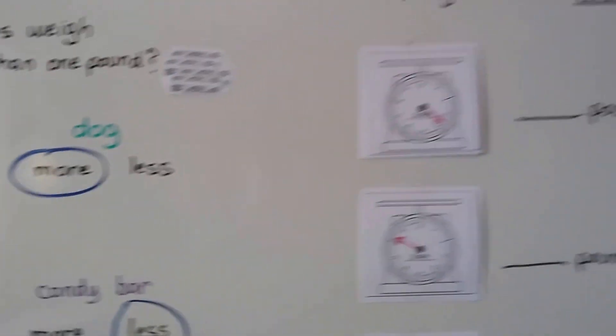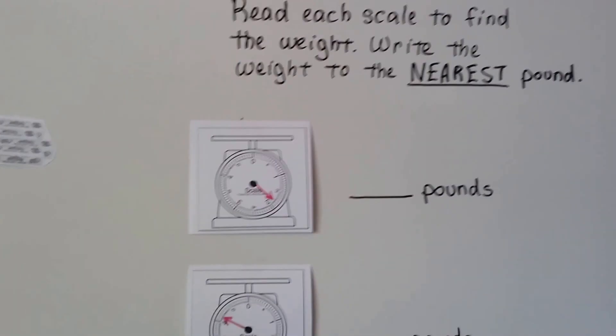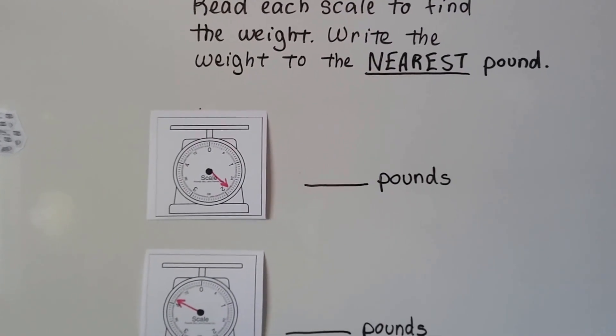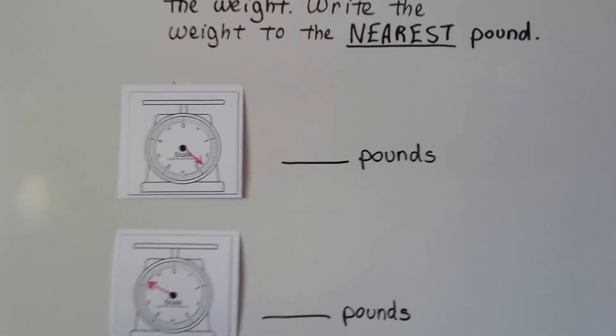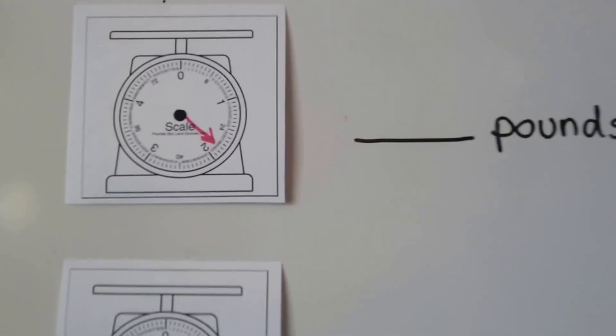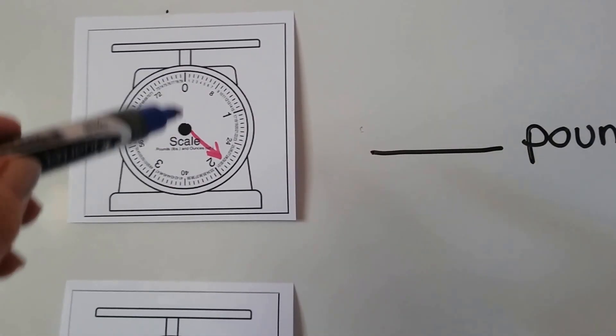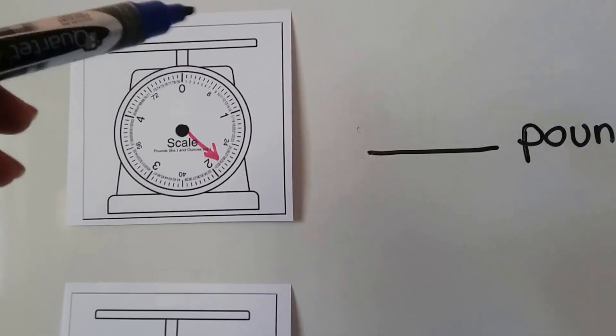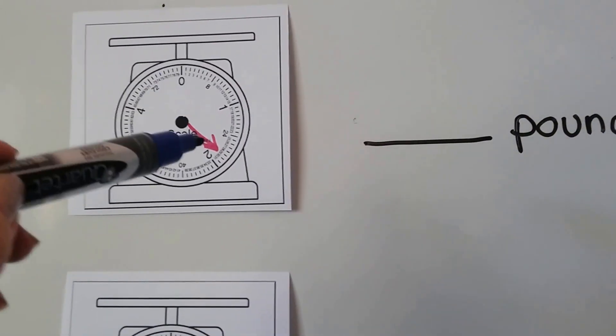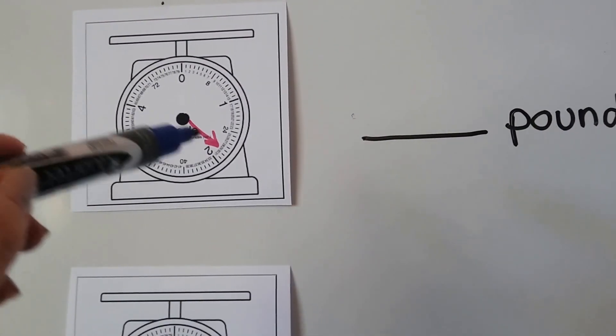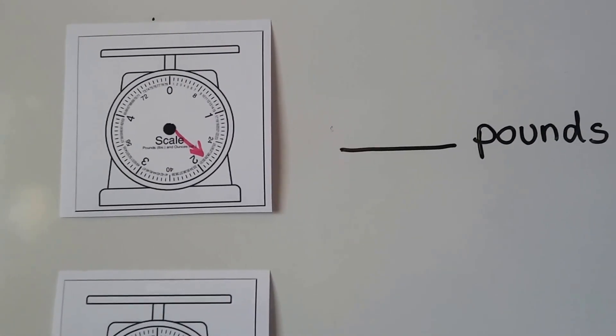So let's read each of these spring scales to find the weight and then we're going to write the weight to the nearest pound. Whichever one the dial is the closest to. So when there's nothing on the spring scale, this dial would point to zero. We're going to pretend there's something up here that is making the dial go to here.